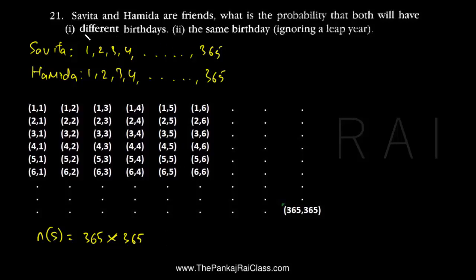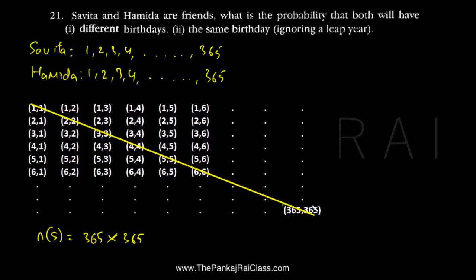The question says: first, they should have different birthdays, and second, they should have the same birthday. Let us talk about the second one — that they should have the same birthday. As you can see, they are having the same birthday across these points: 1 comma 1, 2 comma 2, 3 comma 3, 4 comma 4, 5 comma 5, 6 comma 6, and so on up to 365 comma 365.